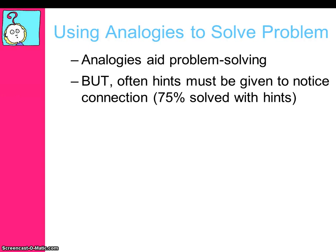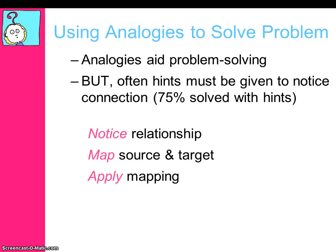Analogies can be great for helping with problem solving, but three things have to happen first. First, people have to notice the relationship between a solution and its analogy — if they don't notice it, the analogy isn't effective. Second, once they notice the relationship, they can map between the source and target problems, identifying similar features in one problem that relate to similar features in another. Third, they can apply the solution of one problem to the other. That is the key to using analogies in problem solving.